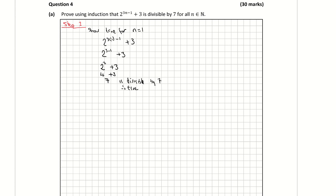Step 2: we are now going to assume true for n equals k. All I'm doing for step 2 is subbing in k for n. So that's going to become 2 to the power of 3k, subtract 1 plus 3. So I'm assuming that that is divisible by 7. Moving on now to step 3.